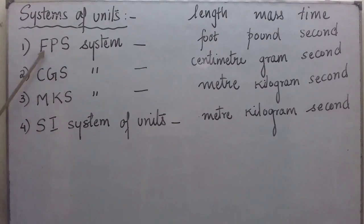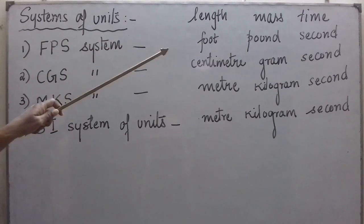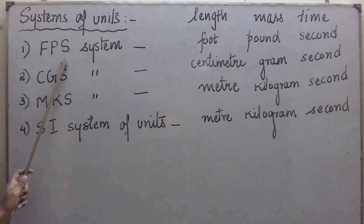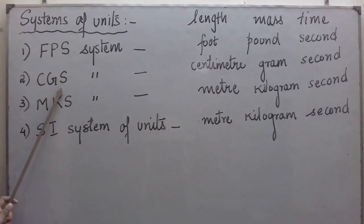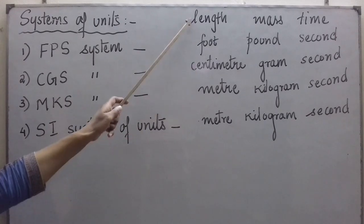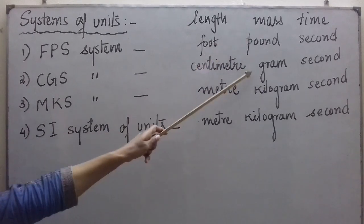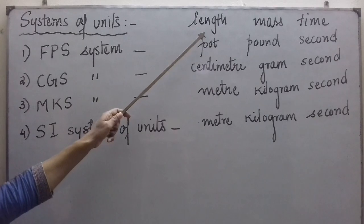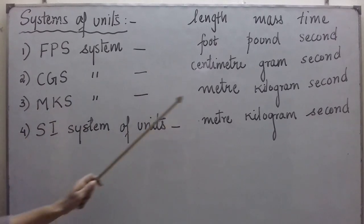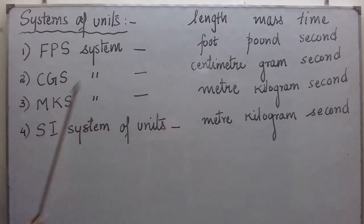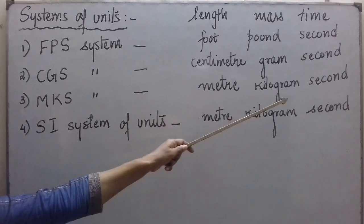The FPS system: F stands for foot, which is the unit of length in this system; P stands for pound, the unit of mass; and S stands for second, the unit of time. Next is the CGS system, in which C stands for centimeter as the unit of length, G stands for gram as the unit of mass, and S stands for second as the unit of time. The third system is MKS: M stands for meter as the unit of length, K stands for kilogram as the unit of mass, and S stands for second as the unit of time.